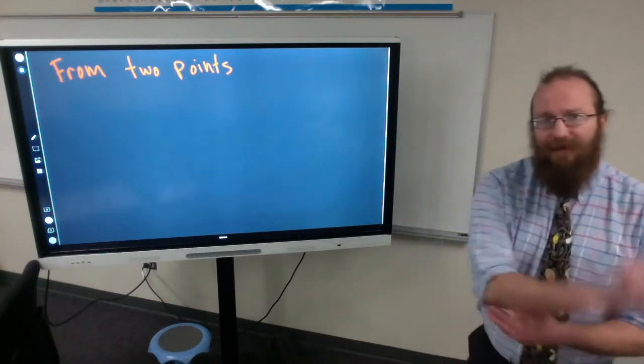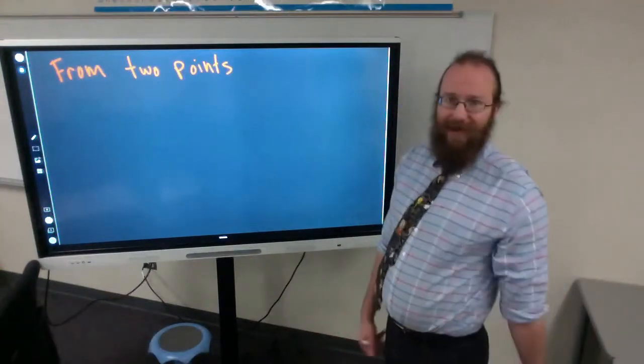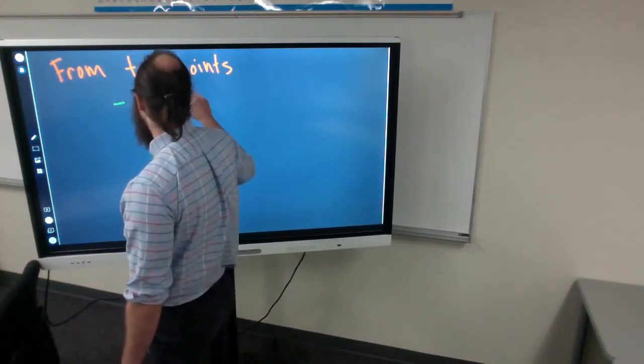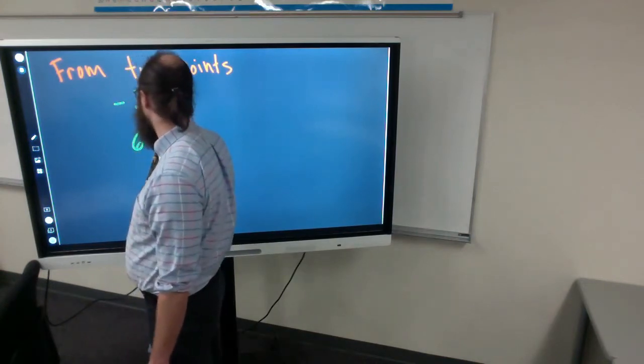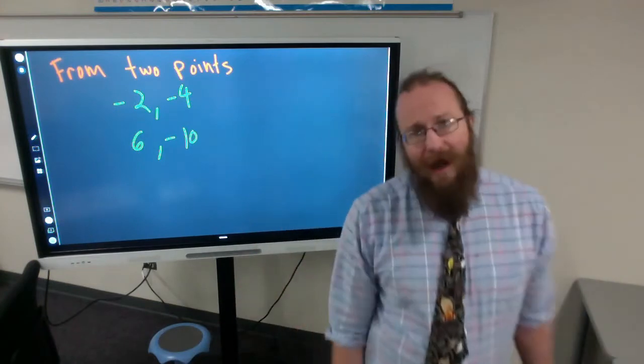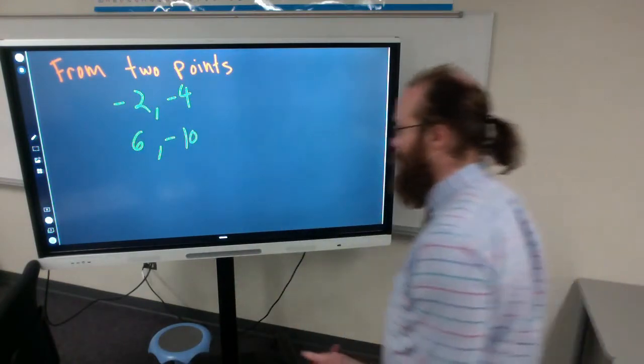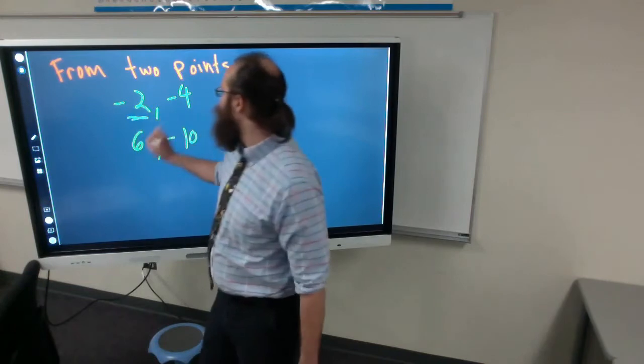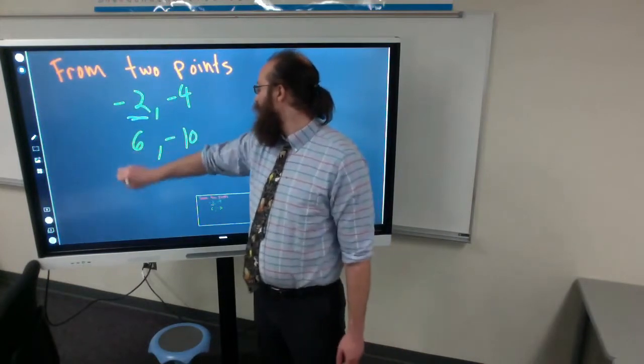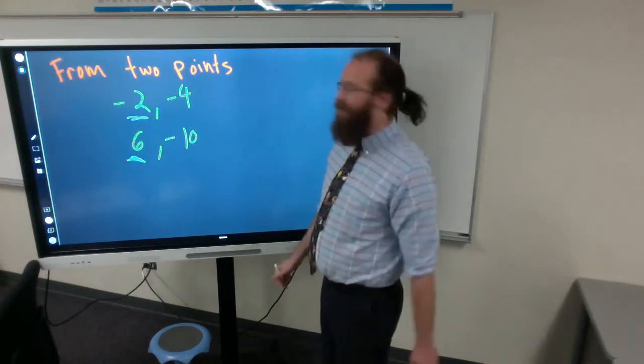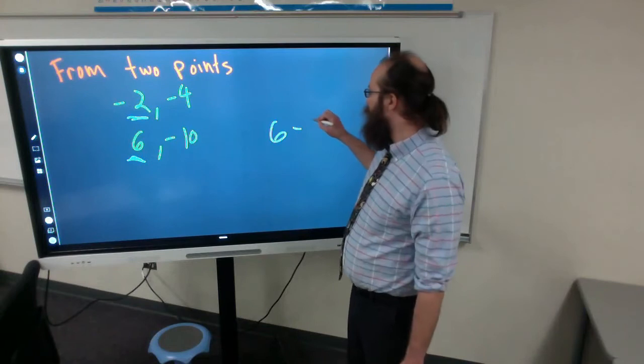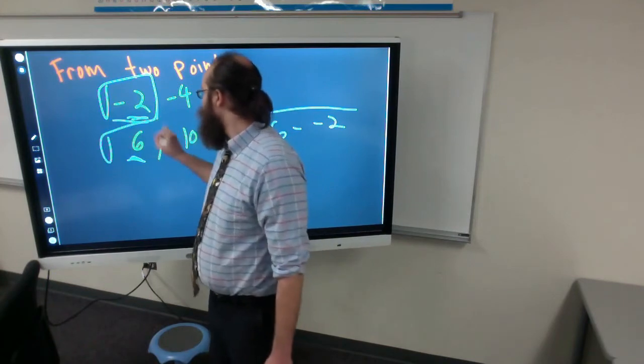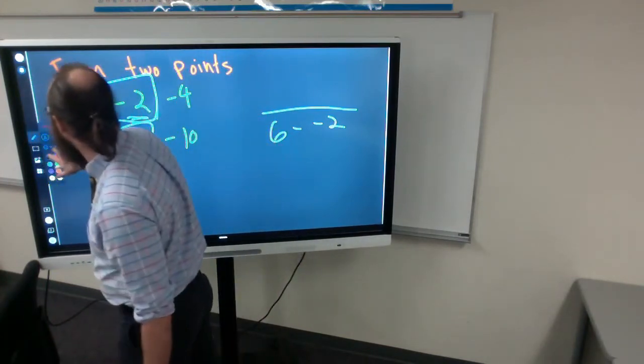Okay, so now writing an equation from two points that aren't the y intercept are probably the hardest thing we have to do with linear. So let's say we have negative two, negative four, and six, negative two. Okay so we got two points, and the first thing we're going to do is find the slope. So remember our x values go on bottom, so this two and this six go on bottom. And you can go in either direction as long as you keep it the same way. I'm going to go up in this case, so we got six minus negative two on bottom.